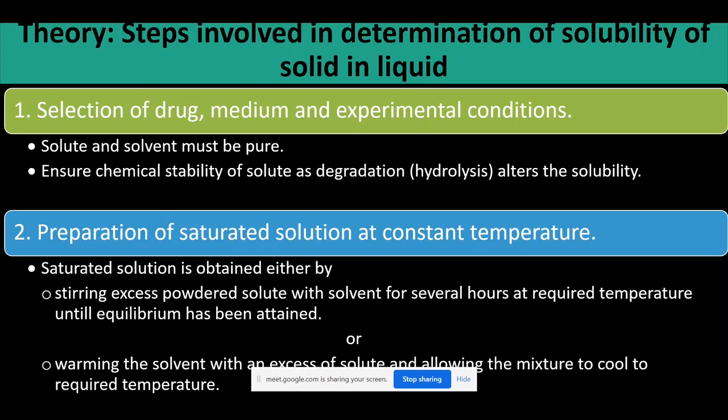The first step while computing the solubility of a substance is the selection of drug, medium, and experimental conditions. So the first step will be that I will fix my solute in which solvent I have to find out the solubility and what conditions will be. In conditions we cannot alter the pressure at lab conditions, so the most important factor which I will be taking here will be temperature. I will first ensure that the solute and solvent I have selected are pure.